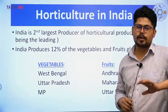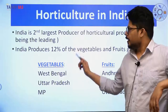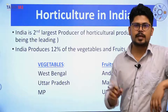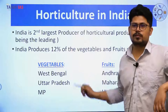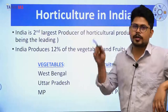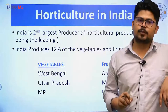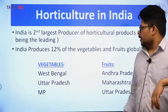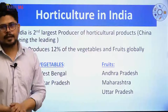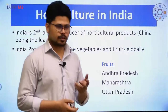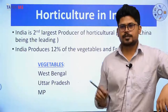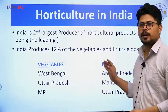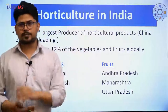India is the second largest producer of horticulture products in the world, with China being first. India produces 12% of the world's vegetables and fruits. India is the topmost producer of fruits and vegetables specifically, though second overall in horticulture. In vegetable production, West Bengal is on top, followed by Uttar Pradesh and Madhya Pradesh. For fruits, Andhra Pradesh is first, then Maharashtra, then Uttar Pradesh.